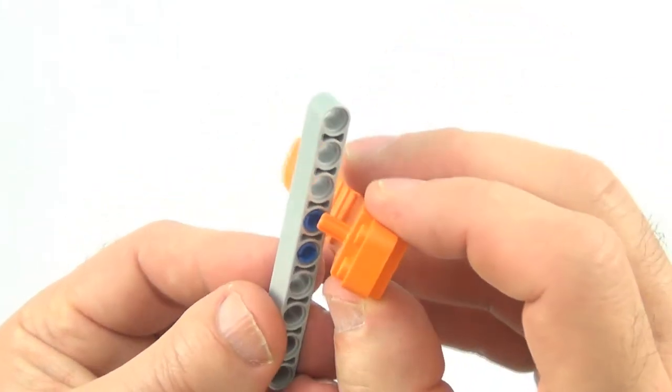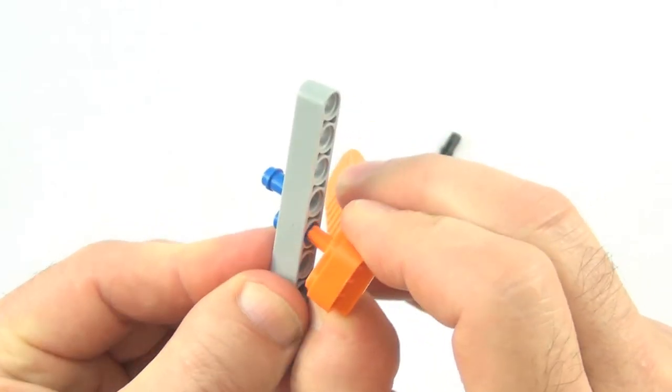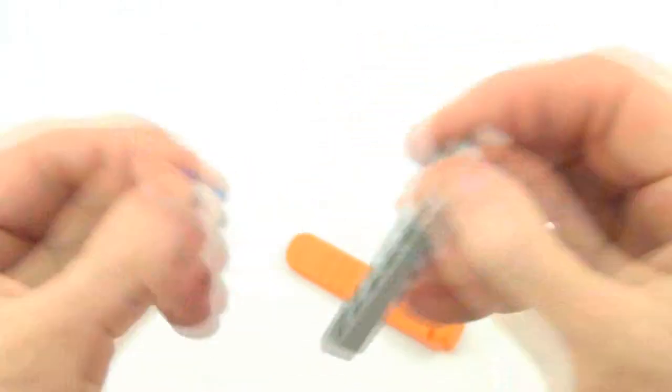This is where I can use the axle removal part of the brick separator and push them out, very easy to get out.